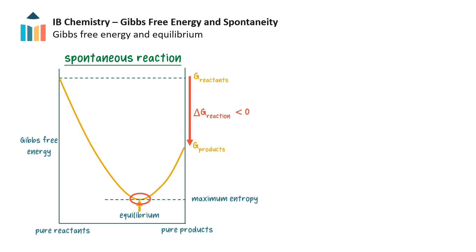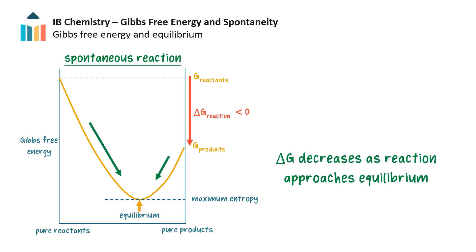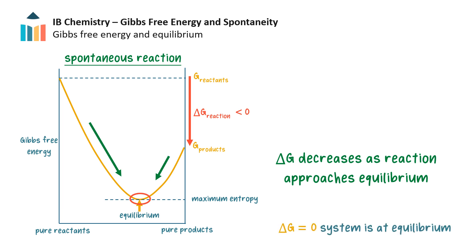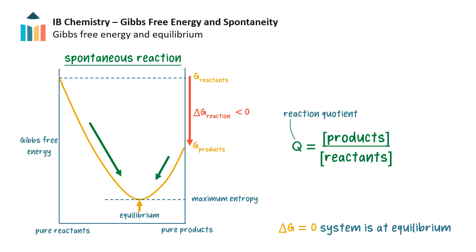Remember, high entropy is favourable. The reaction is at equilibrium — whether the forward or reverse reaction occurs, the value of delta G decreases as it approaches equilibrium. At equilibrium, delta G equals zero. The reaction quotient Q measures the relative concentrations of reactants and products at a given moment in the reaction, so Q is a measure of the extent of the reaction. Q is zero at the start of the reaction, increases during the course of the reaction, and is equal to infinity at the end of the reaction.